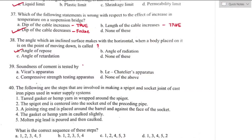Question number thirty-nine: soundness of cement is tested by the Le Chatelier apparatus. Option B is the right answer. Expansion of cement is measured by soundness test — the ability to resist volume expansion, indicating durability. It can be tested by the Le Chatelier method and autoclave method.